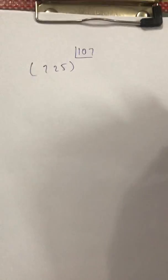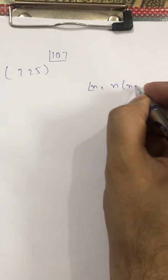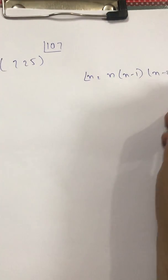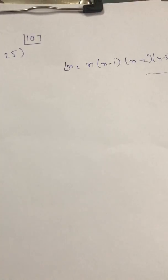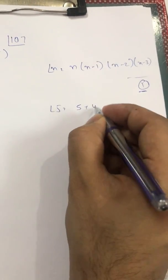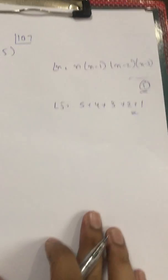So, as we all know about what is factorial, suppose if I write here factorial n that equals n, n minus 1, n minus 2, n minus 3, this will move up to 1. If I write here factorial 5 that is 5 into 4 into 3 into 2 into 1, this is our factorial.